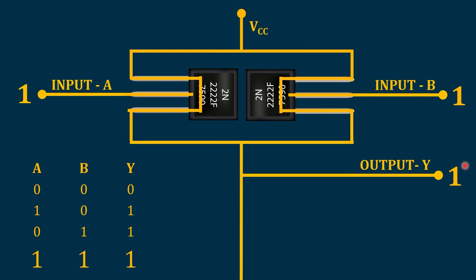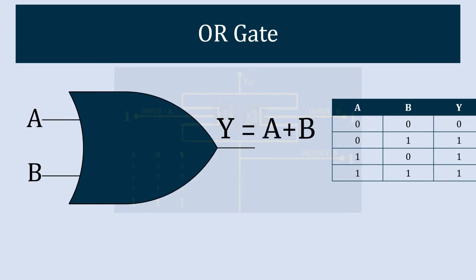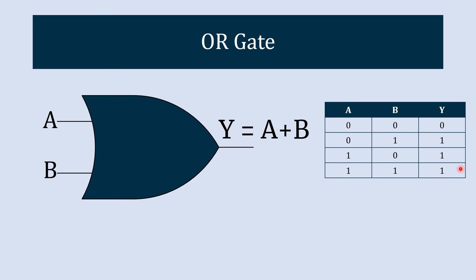So that's how this OR gate functions. By observing this truth table, if we want to write a simplified boolean expression, we can write Y equals A plus B, the addition of both inputs.